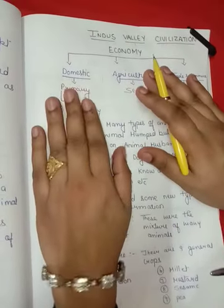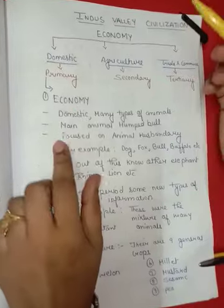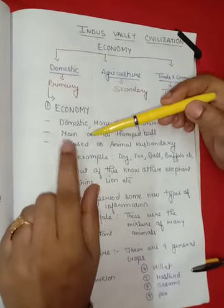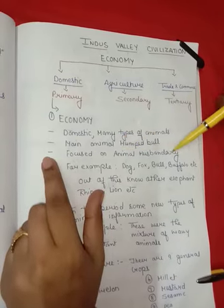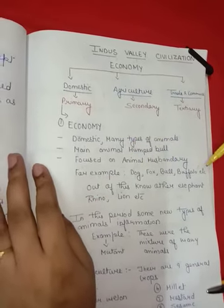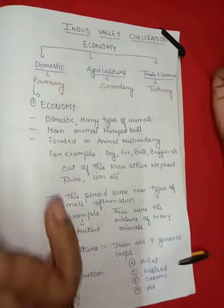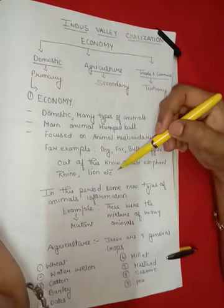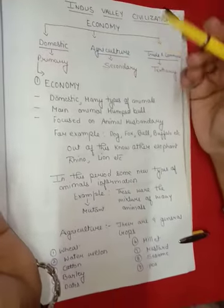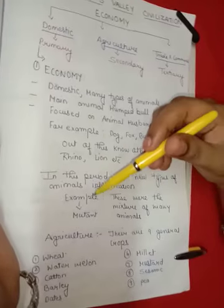At a domestic level, they domesticated many types of animals. The main animal is the humped bull. They focused on animal husbandry — for example, dog, fox, bull, buffalo, etc. Some other animals include elephant, rhinoceros, lion, etc.